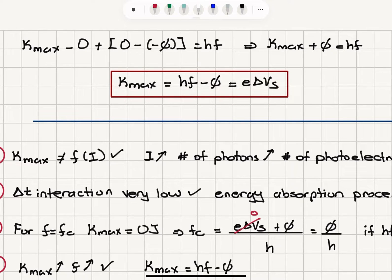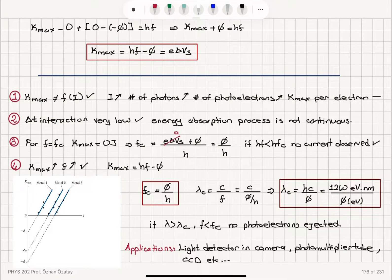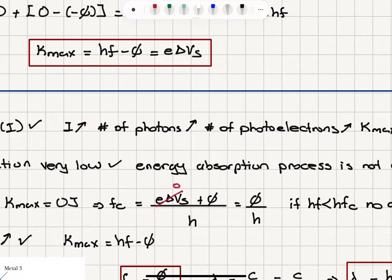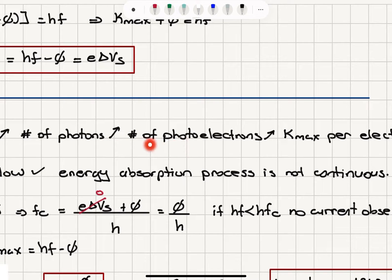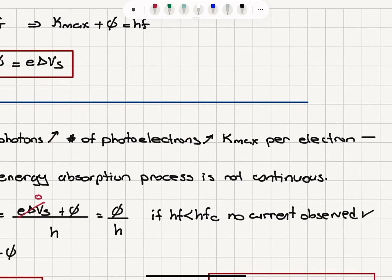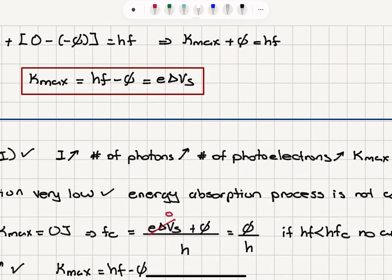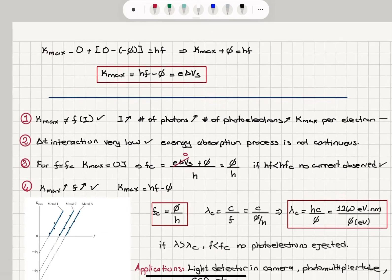This equation explains how the maximum kinetic energy is a function of frequency, not intensity. If the intensity of light is increased, the total energy carried by the electromagnetic wave increases because the number of photons increases. In the one-photon, one-electron process, more photons mean more photoelectrons ejected, which increases the current. However, the maximum kinetic energy per electron is unaffected — it is directly proportional to frequency and unrelated to intensity.